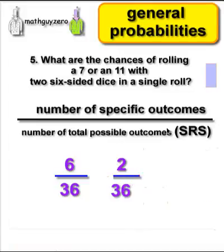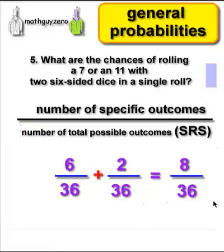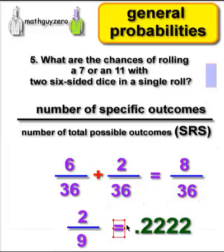Remember, this is an 'or' problem. 'Or' should trigger addition. So go ahead and add those two up, and you're going to get a grand total of 8 out of 36. Reduce that to 2 over 9, which comes out to be 0.2222.